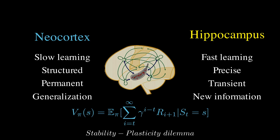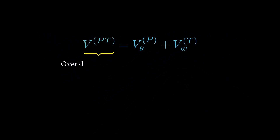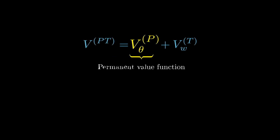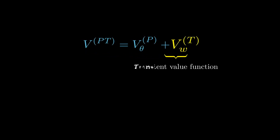We propose a CLS-inspired approach to the stability-plasticity dilemma by decomposing the overall value function of the agent as a sum of two components: a permanent value function and a transient value function.